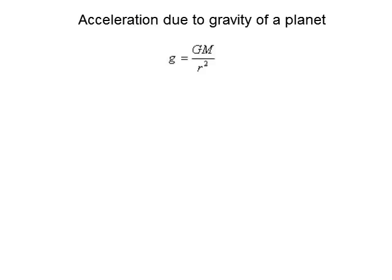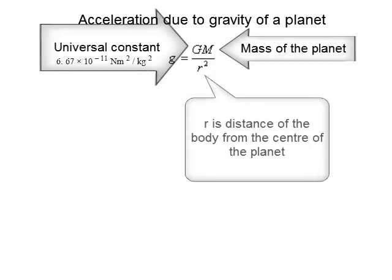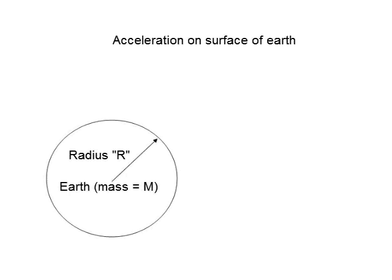The acceleration due to the gravitational force of a planet is known as acceleration due to gravity of that planet. It is given by g = GM/R², where G is the universal constant, M is the mass of the planet, and R is the distance of the body from the center of the planet. On the surface of the earth, M is the mass of the earth and R is the radius of the earth.